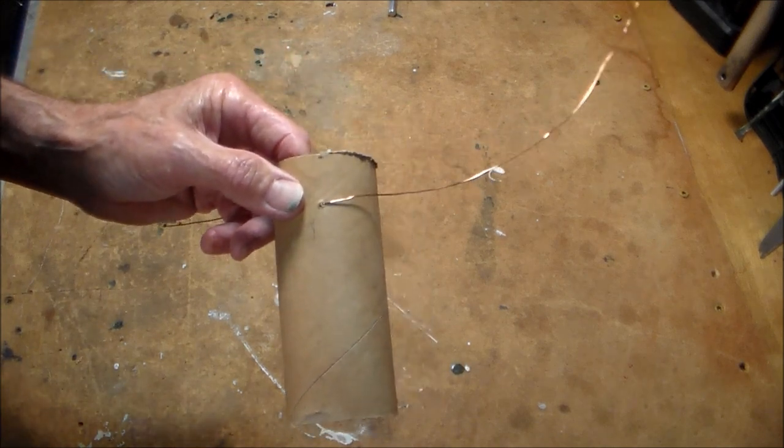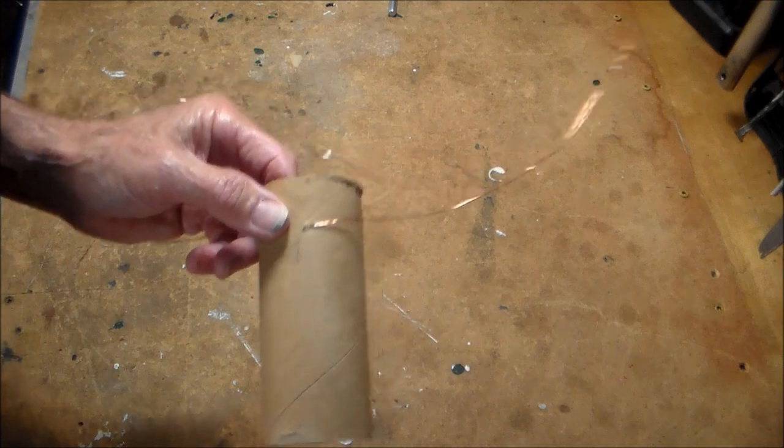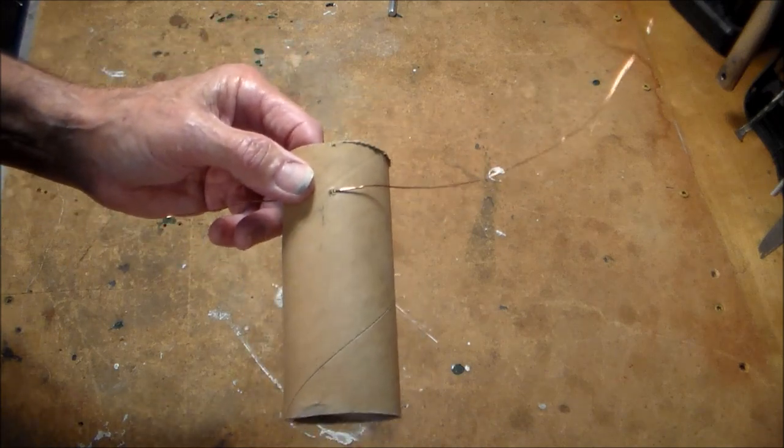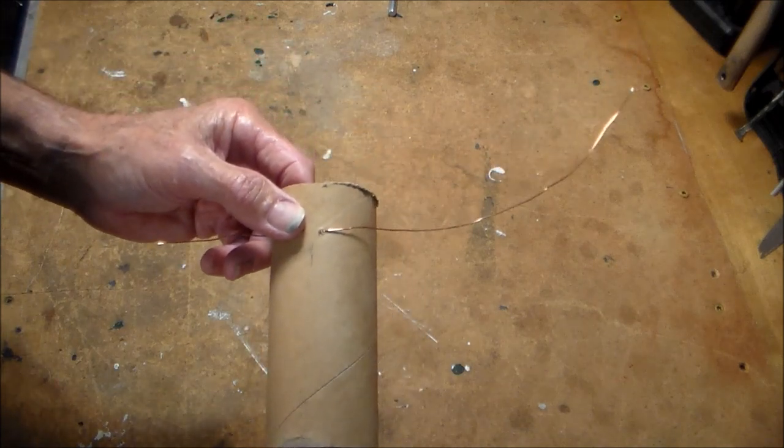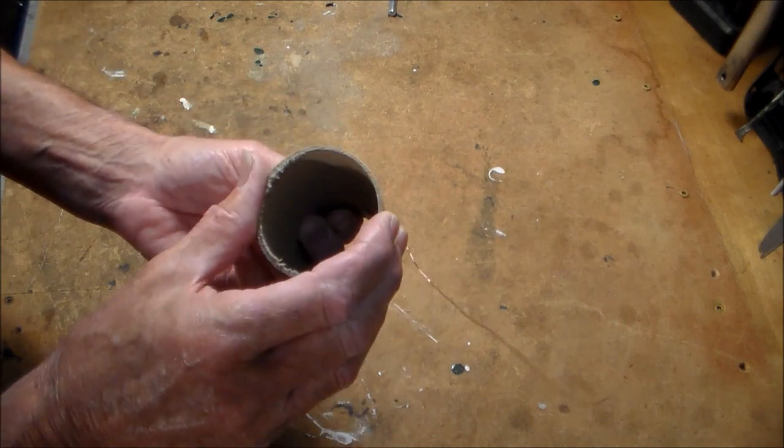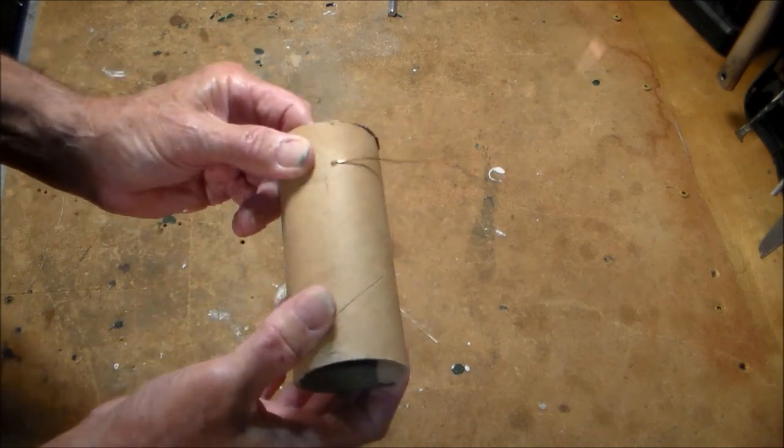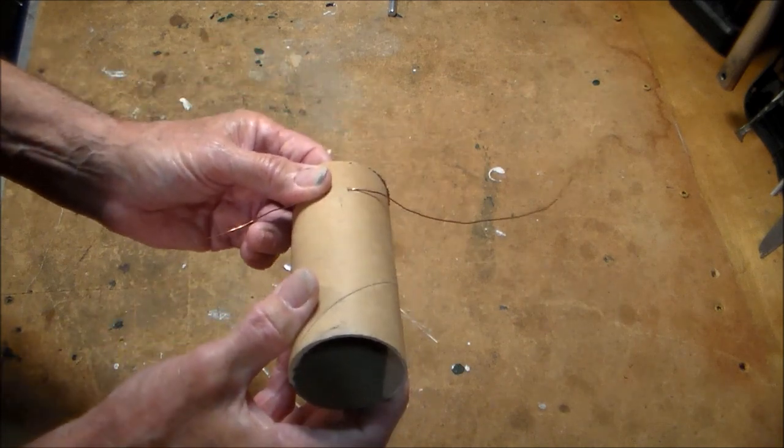Now, of course, before you can start winding your coil, you will need something to put it on, some kind of a form. And please, for heaven's sakes, do not use a toilet paper tube. They are way too flimsy. What I use is mailing tubes. They come in different diameters. They're very, very sturdy and very inexpensive.